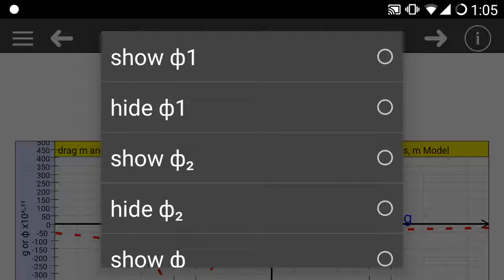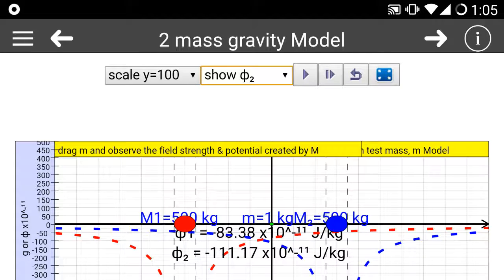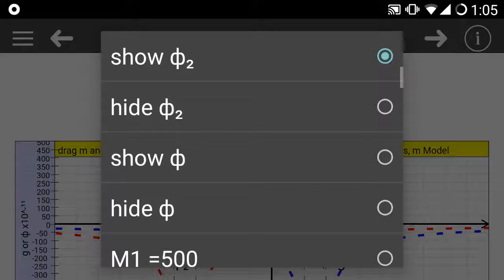You can now show potential due to mass 2, and you can again dynamically drag the masses and it will automatically plot the graphs.